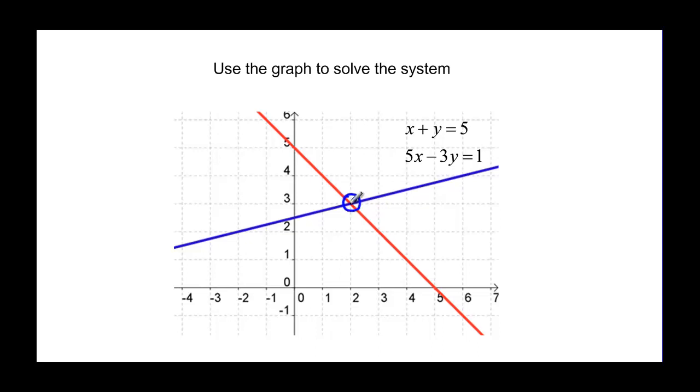So this point right here is 2 in the x and 3 in the y, so 2, 3, and let's just double check. 2 plus 3 is equal to 5, and that satisfies the top equation, and 5 times 2 minus 3 times 3 is equal to 1. 10 minus 9 is equal to 1, so we know that it satisfied both equations.